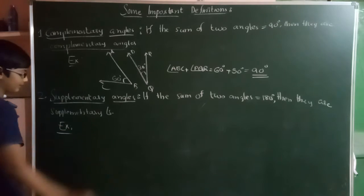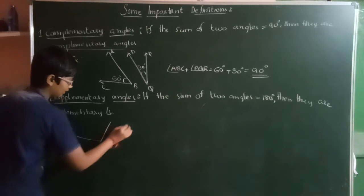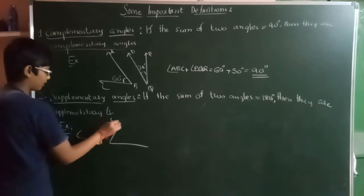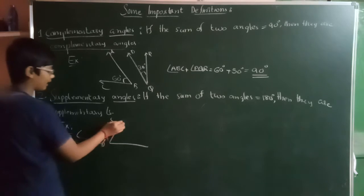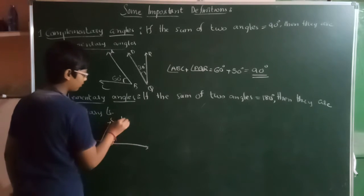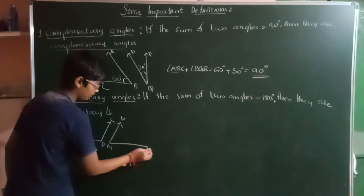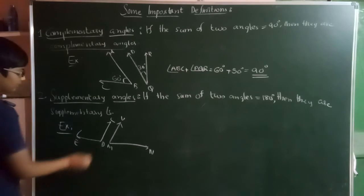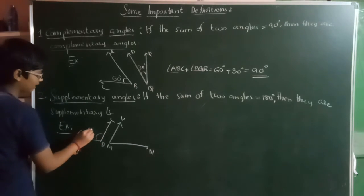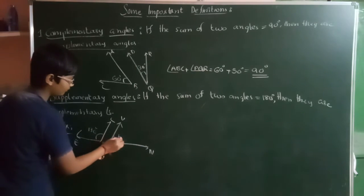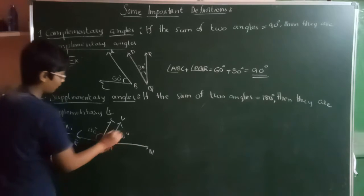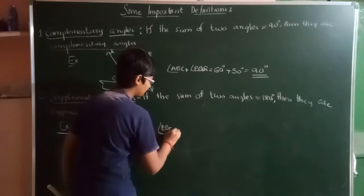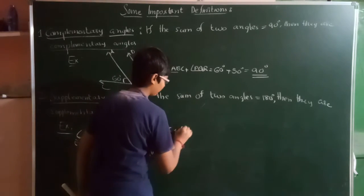Let's see some examples. There are two angles: angle CBE and angle VMN. This angle is 130 degrees and the other is 50 degrees. Now, let's add these both: angle EDC plus angle VMN.